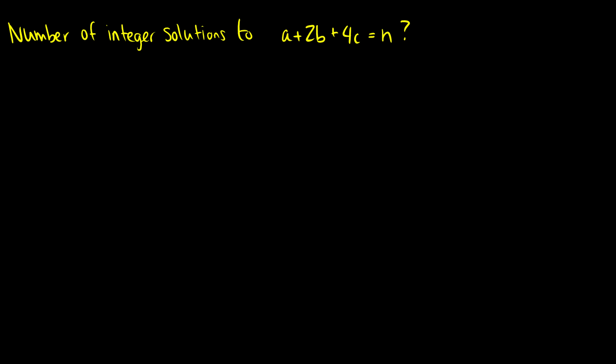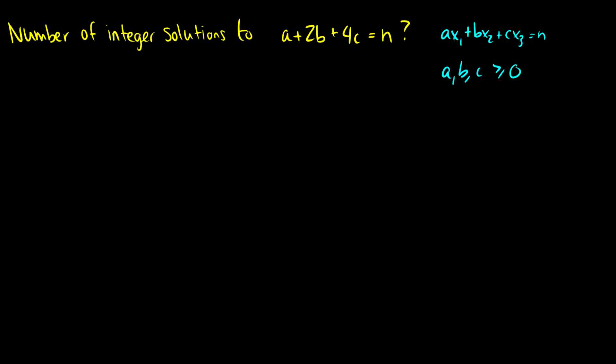Before, we've dealt with x1 + x2 + x3 = n, which is just C(3+n−1, n). But what happens when we put coefficients in front of those? For instance: ax1 + bx2 + cx3 = n — that gets trickier. We just use generating functions. In this case, a, b, and c are all greater than or equal to zero.